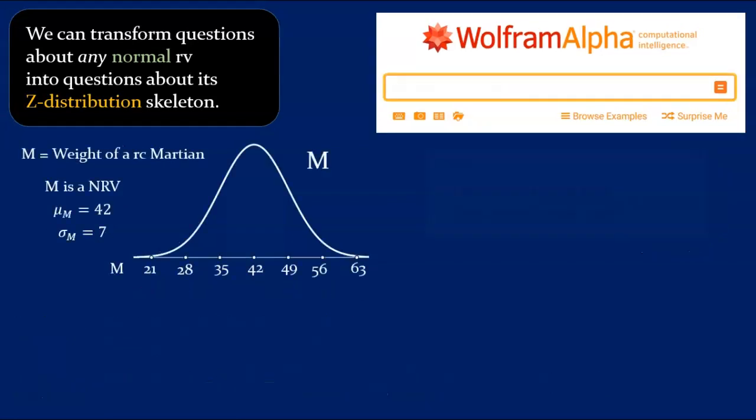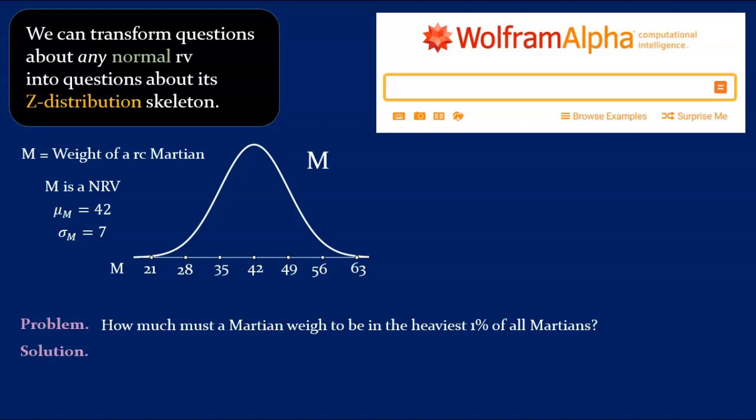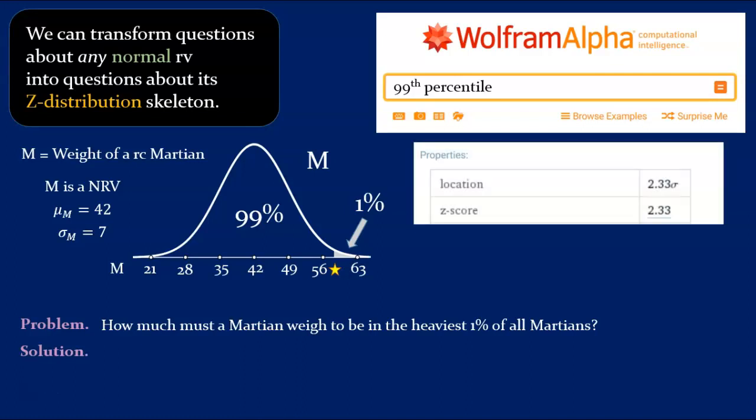We'd better look at a question about those Martian weights. Martian society is based on a hierarchy of weight. The heavier the Martian, the more social status he has. With that in mind, we'd like to know, how much must a Martian weigh to be in the heaviest 1% of all Martians? That is, we're looking for the weight that will separate the top 1% from the remaining 99%. Whatever it is, we know it's at the 99th percentile of our distribution. Simply typing 99th percentile into Wolfram Alpha will help us.